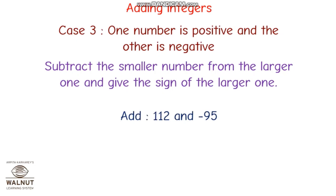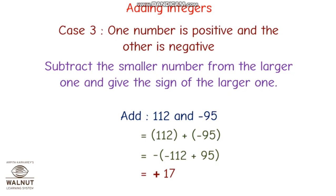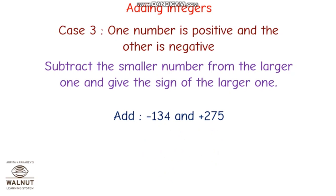Another example: 112 and minus 95. The larger number is 112 and its sign is positive, so the answer will be positive. 112 minus 95 gives plus 17. Another one: minus 134 plus 225. The larger number is 225 and it has a plus sign, so the answer will be positive. Minus 134 plus 225 gives plus 141.